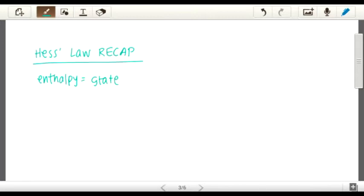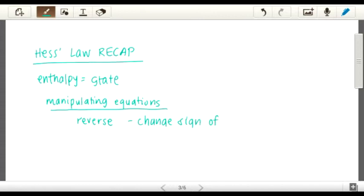Also, we have to remember the few ways to manipulate equations. So the first way is through reversing the equation, which is basically flipping the products and the reactants. And to do this, we have to make sure that we change the sign of the change in enthalpy, which is because you're going from endothermic to exothermic, or the other way around.